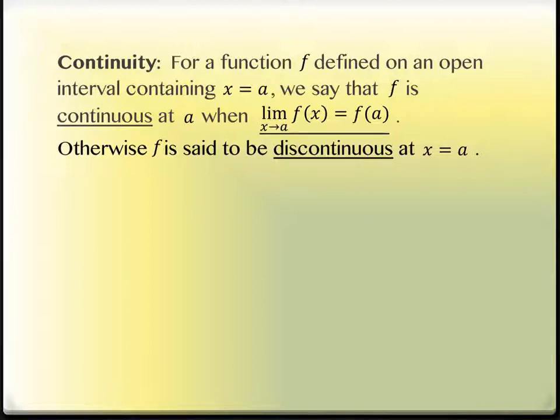So we're talking about continuity, and here's our actual technical definition of continuity. Continuity says, for a function f defined on an open interval containing x equals a, we say that f is continuous at a when the limit as x approaches a of f of x equals f of a. Otherwise, f is said to be discontinuous at a.